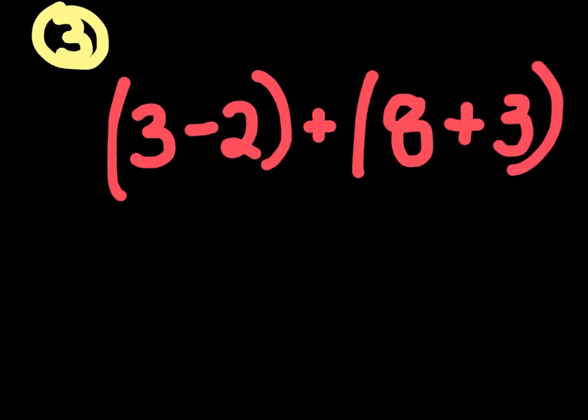Alright, so our last question is a bit difficult. So let's see what we can do. So in this question, we have open parentheses, 3 minus 2, close parentheses, plus open parentheses, 8 plus 3, close parentheses. In this question, we have 2 parentheses. No difference.